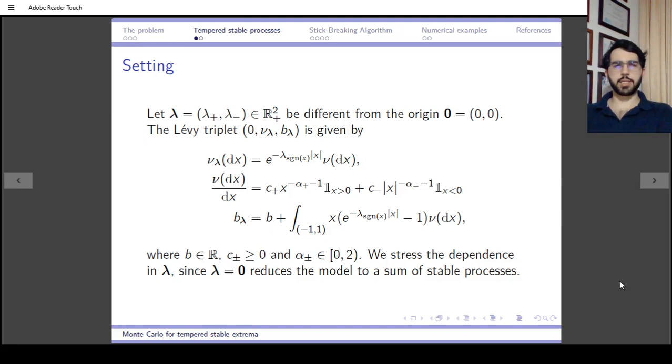Let λ be a two-dimensional vector with non-negative components different from the origin θ = (0,0). If it is the origin, then essentially you have a stable process or the sum of two one-sided stable processes. The Levy measure of this tempered stable process, in terms of the corresponding stable process, is the exponential tempering of the stable Levy measure.